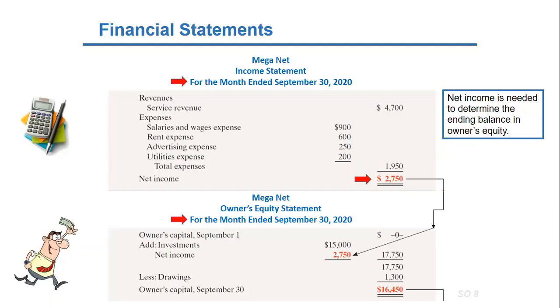If we're having a net loss, it is deducted, plus less drawings, in order to get the final owner's capital.